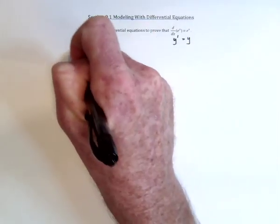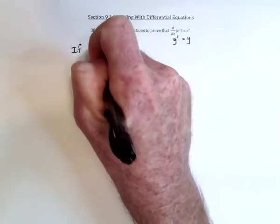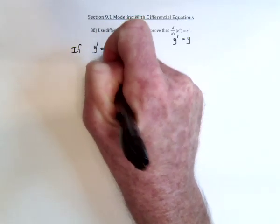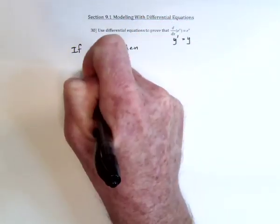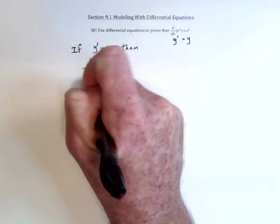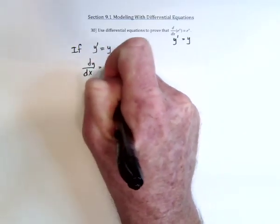So then you say, well, if you know that y prime is equal to itself, then we would have dy/dx is equal to y.